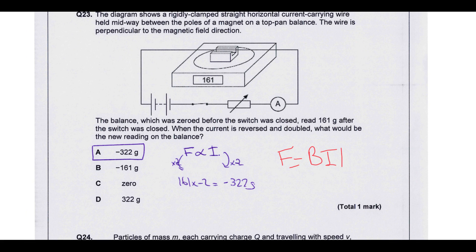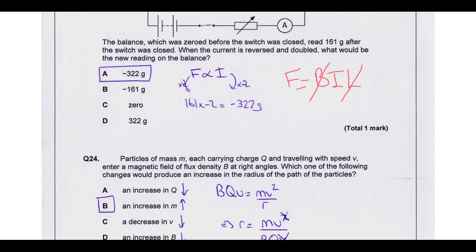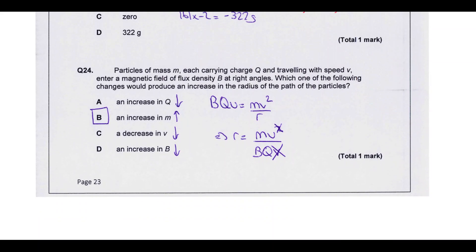The diagram shows a rigidly clamped straight horizontal current carrying wire held midway between the poles of magnet onto a balance. The wire is perpendicular to the magnetic field direction. The balance was zeroed, so it's not going to measure the weight of the wire. And it read 16g after the switch was closed. The current is reversed and doubled. What would be the new reading on the balance? So the equation we're going to use here is F equals BIL. Length is constant. B is constant. So we don't really need to worry about those. So we get this expression. The force is directly proportional to the current. So if the current is multiplied by minus 2, because it's reversed and doubled, force must also be multiplied by minus 2. So it's going to measure minus 32 grams.